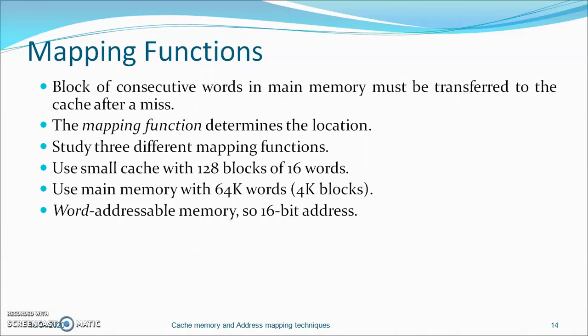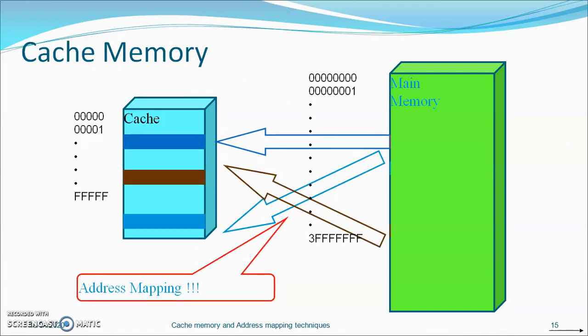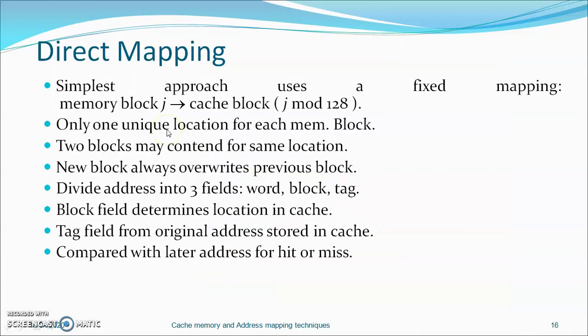We will consider different mapping functions. Mapping is about how to place the main memory blocks onto the cache lines — cache locations. Three types of mapping functions are considered: direct mapping, associative mapping, and set-associative mapping. The mapping functions use a small cache with 128 blocks of 16 words and a main memory with 64K words — a word-addressable memory with 16-bit addresses. Address mapping allocates or places main memory blocks onto the cache locations depending on the mapping type.